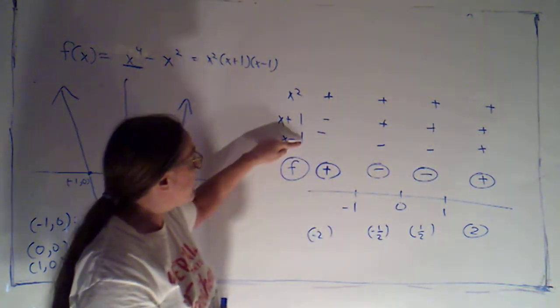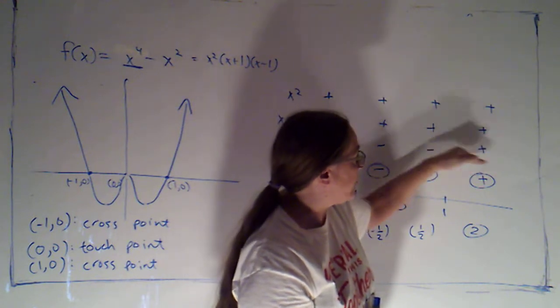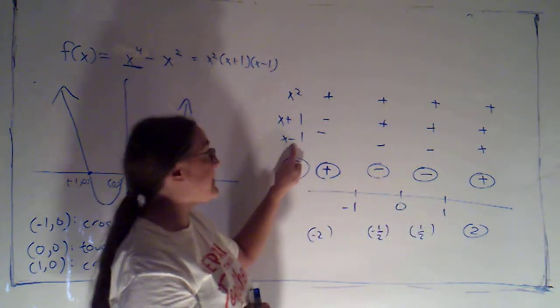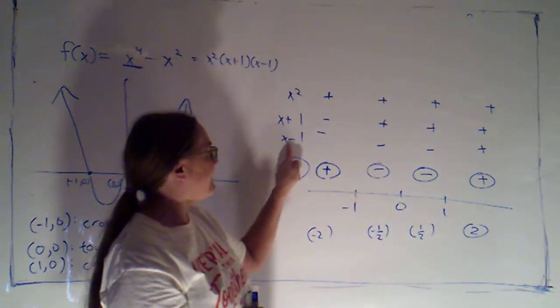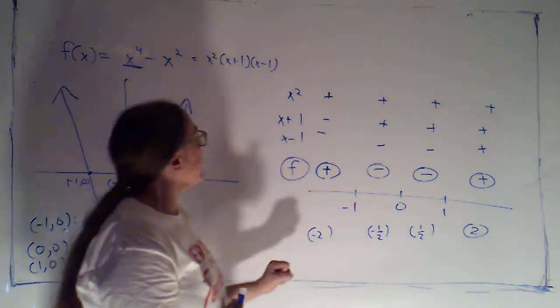Now, if I look at x minus 1, it was negative, negative, negative, then it switched to positive. Where did it change? At 1. That's the zero that goes with that factor. If x is 1, that factor, x minus 1, will be zero.